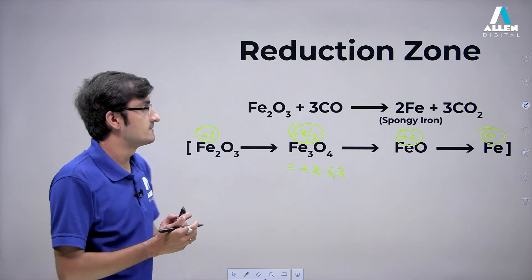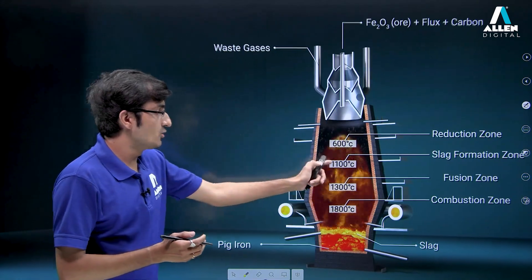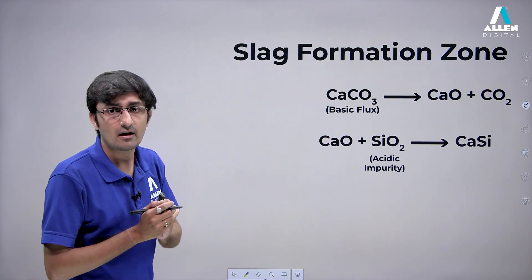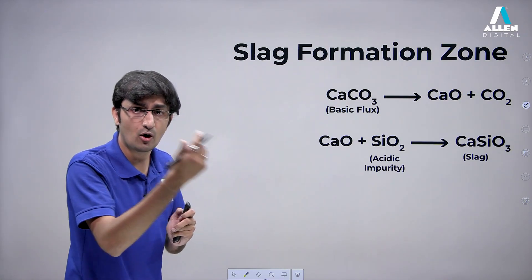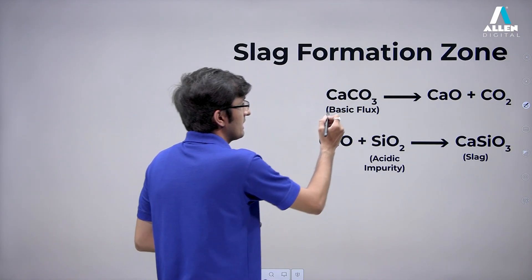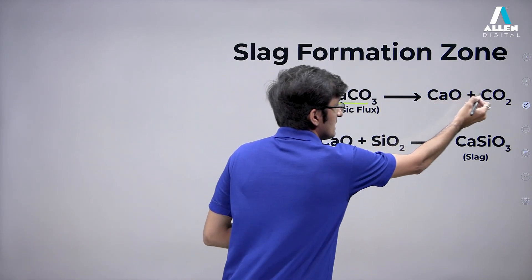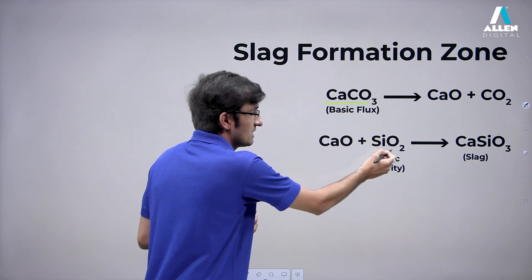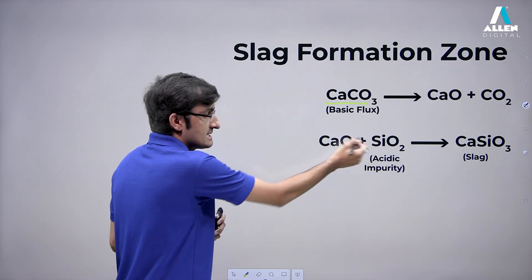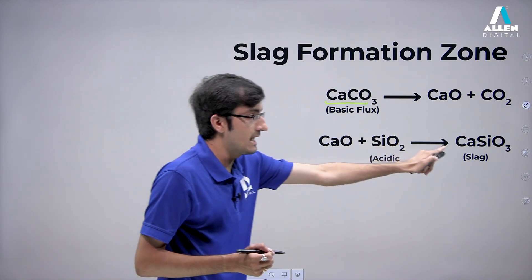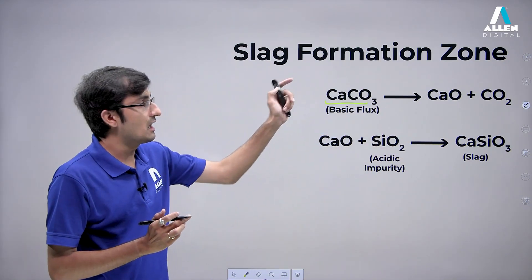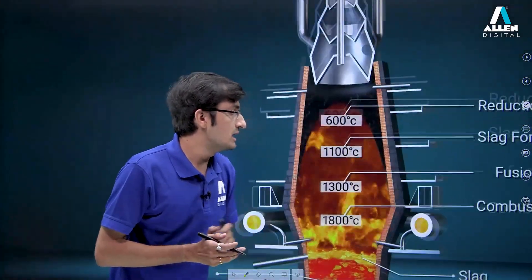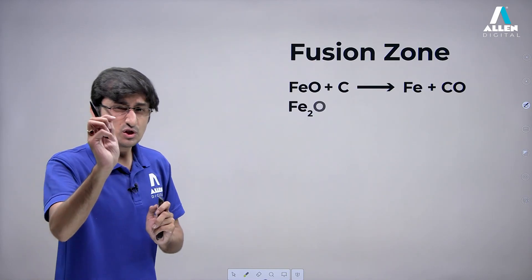Next is the slag formation zone. As the name suggests, slag is formed here. Slag comes from flux and impurities. Our flux, CaCO₃, when heated, gives CaO plus CO₂. This CaO then reacts with the impurities present, such as SiO₂, to form slag. Slag is lighter than metal, as already discussed.